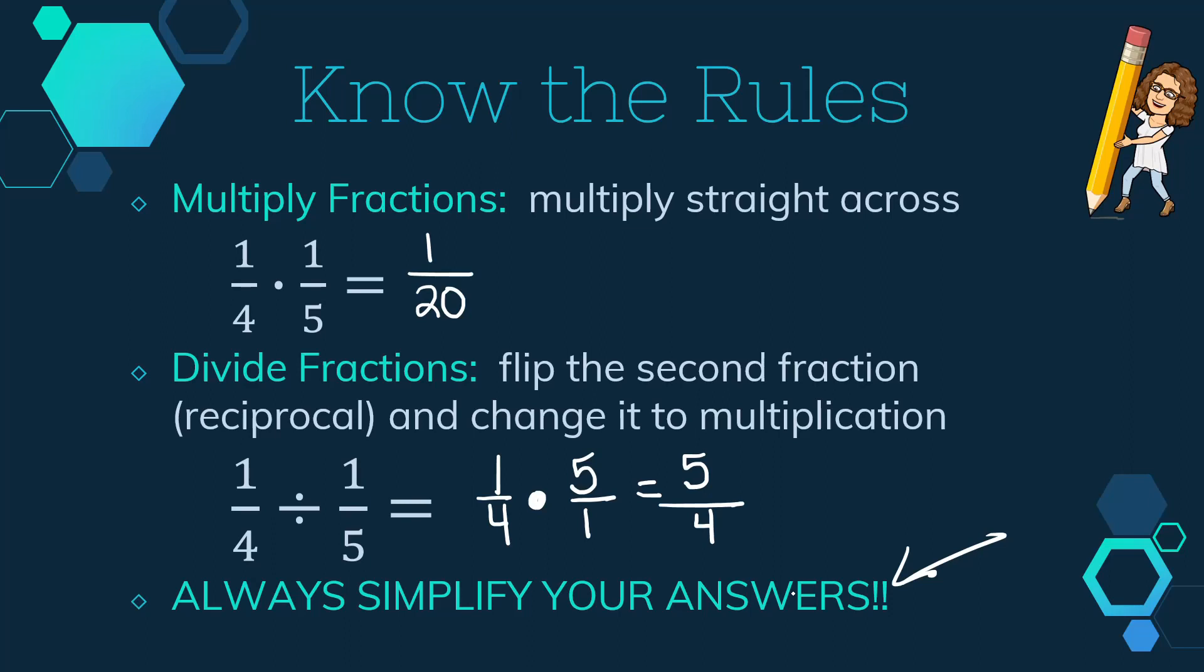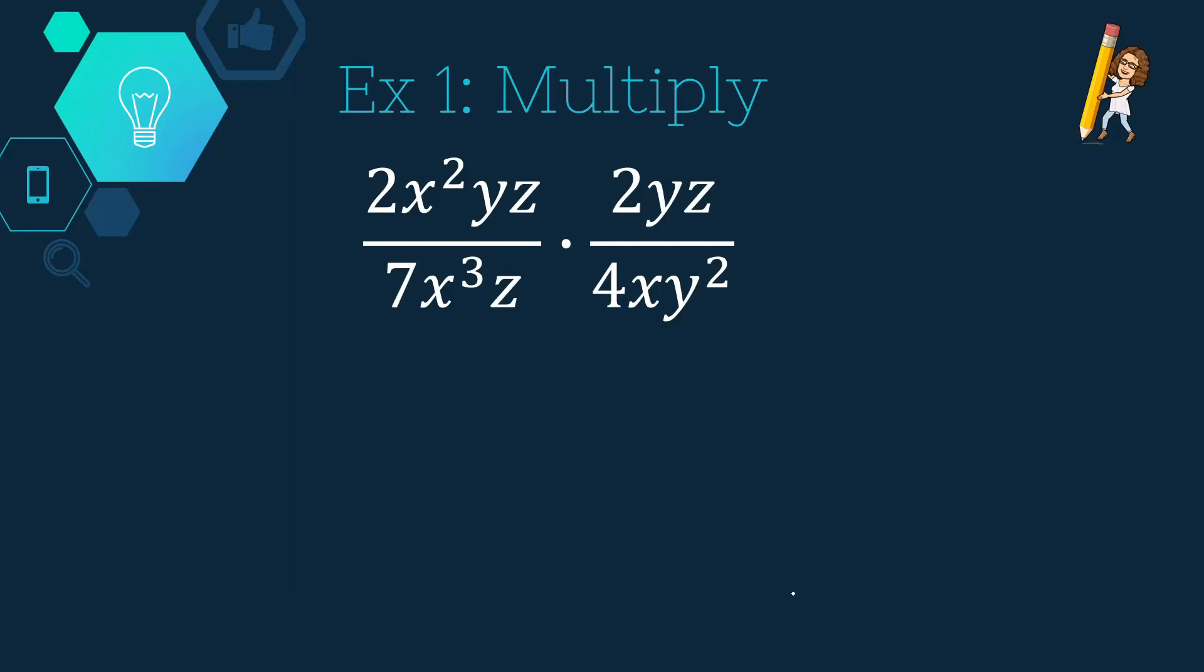Now, we're not going to be doing just numbers with our expressions today. We're going to actually have variables in it. Let's try our first problem. 2x squared yz over 7x cubed z times 2yz over 4xy squared. So first thing I'm going to do is I'm going to multiply across and multiply across.